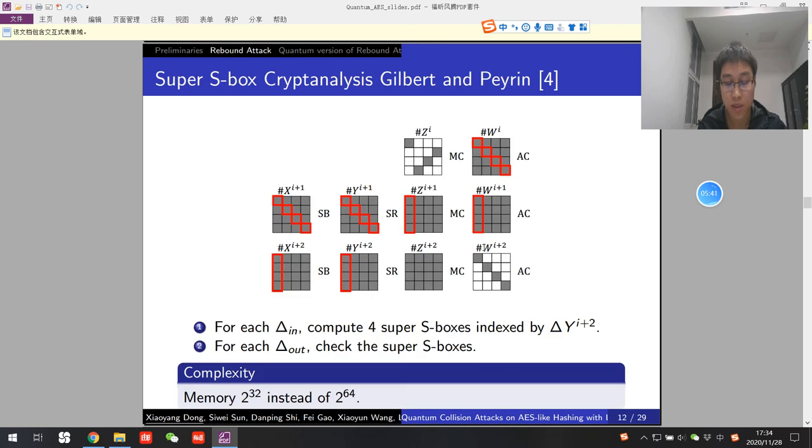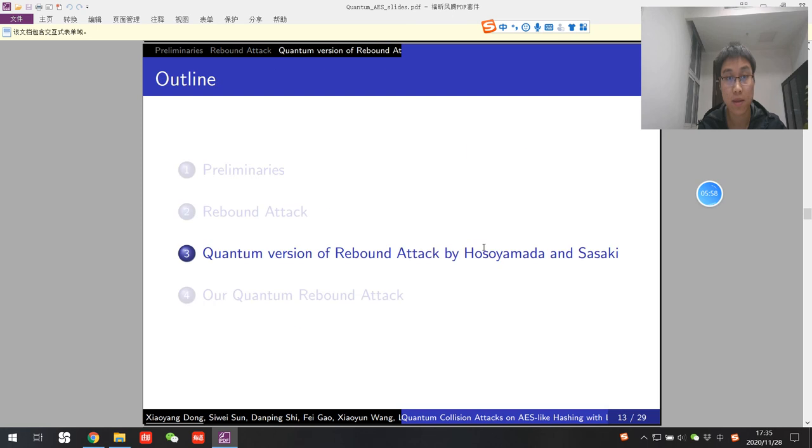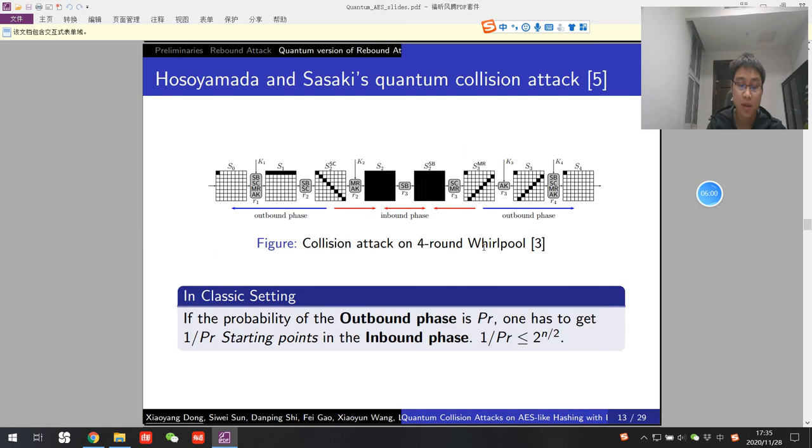Later, Gilbert and Peyrin introduced the super-box technique to improve the rebound attack. It covers two S-box layers in the inbound phase with a 2 to 32 memory complexity.